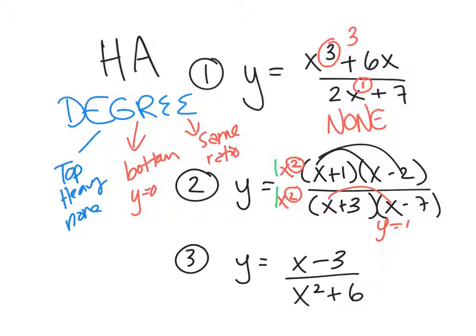And then number three, you have the degree on the top is 1, the degree on the bottom is 2. It's bottom heavy. So what is that going to be? Y equals 0.